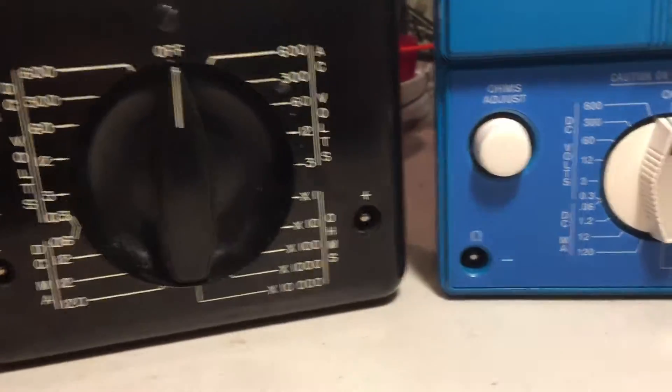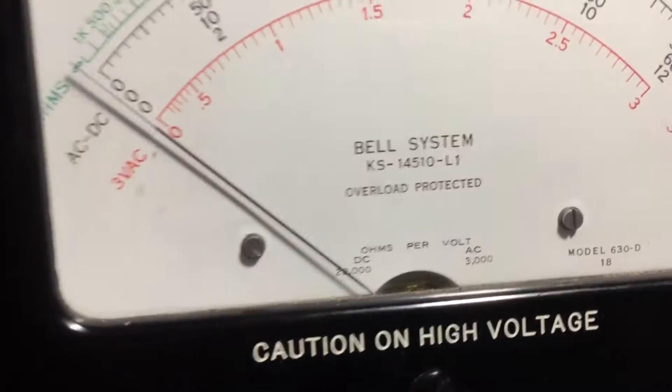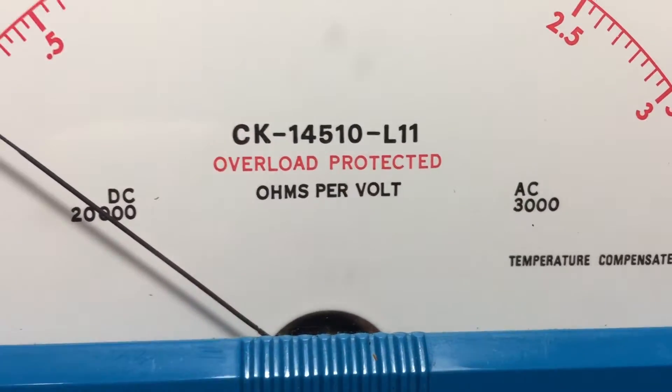I'll take these meters apart in a moment. A couple of things to note is they are 20,000 ohm per volt for DC. It looks like 3000 for AC. Pretty standard stuff.